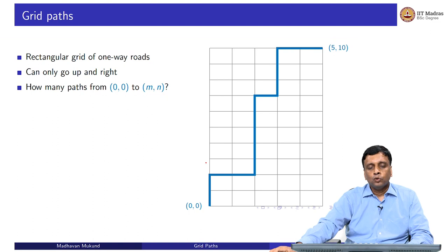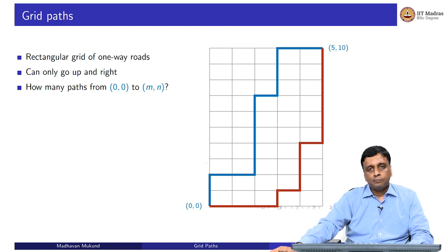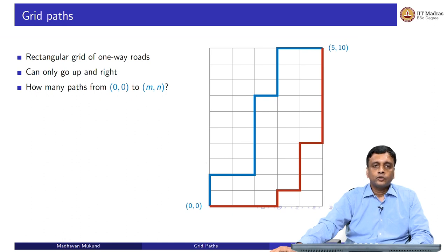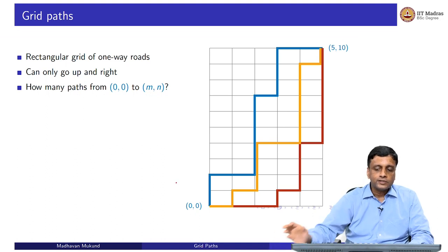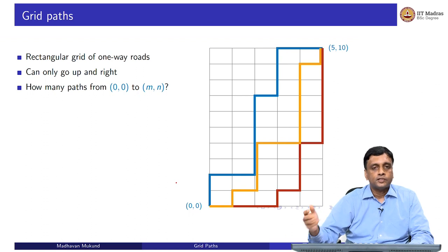For example, the blue line is one such path — it only goes up or right, taking us from (0,0). In this concrete case where m is 5 and n is 10, it takes us from (0,0) to (5,10). Here is another path, the red path — it goes further to the right before starting to go up, but also never moves left or down. And here is a third yellow path. There are obviously many different paths, so the question is how many such paths are there? This is what we want to count.